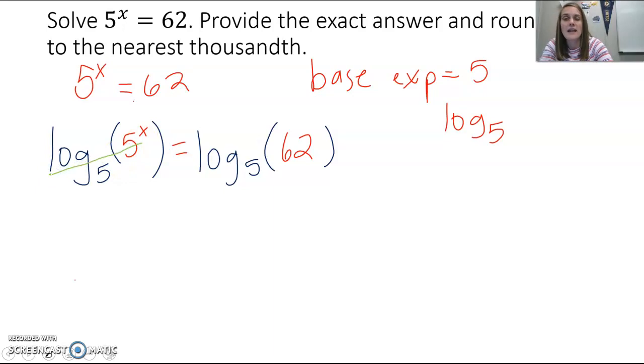So this log and the exponential cancel out, and you're left with just the exponent equals log base 5 of 62.